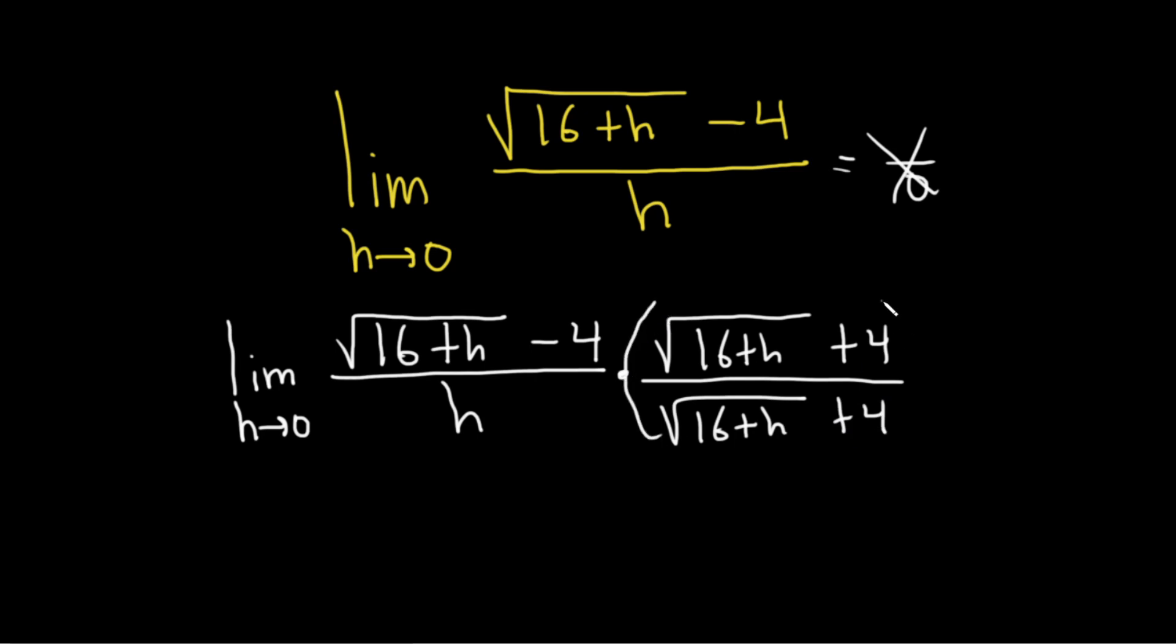We're basically multiplying by 1 and we're multiplying by the so-called conjugate. And the reason is this. Check this out. There is a formula that tells us if you have a minus b times a plus b that that is a squared minus b squared. That's the difference of squares formula.